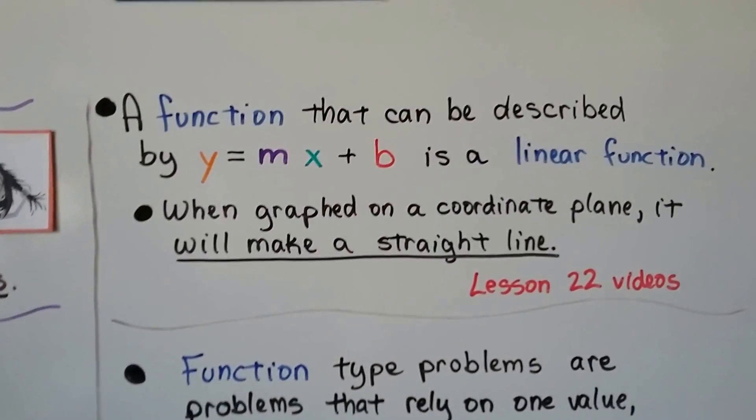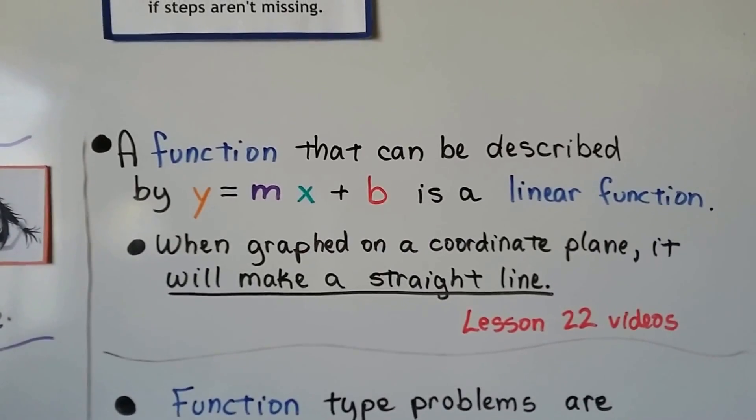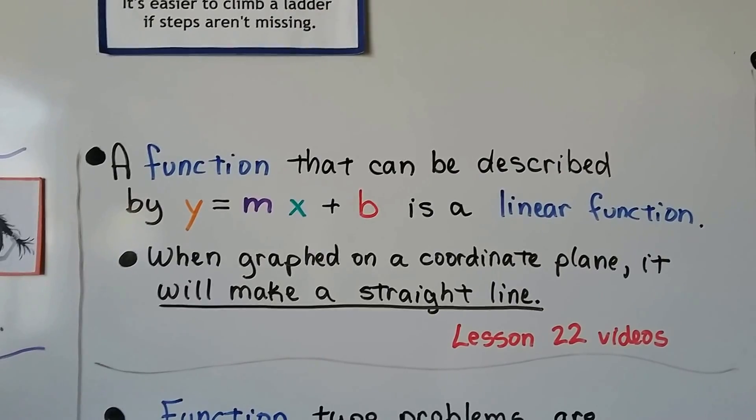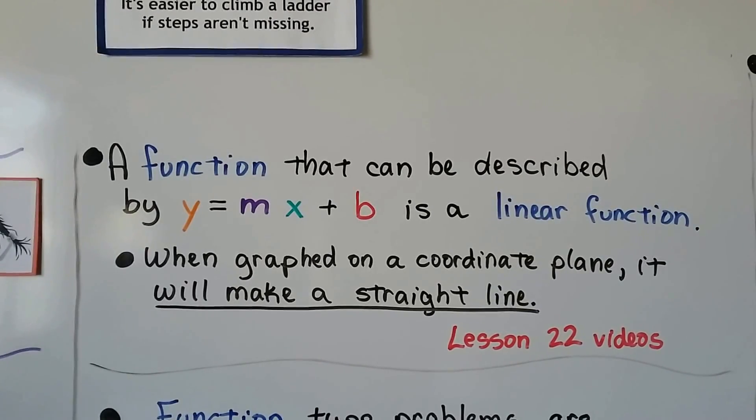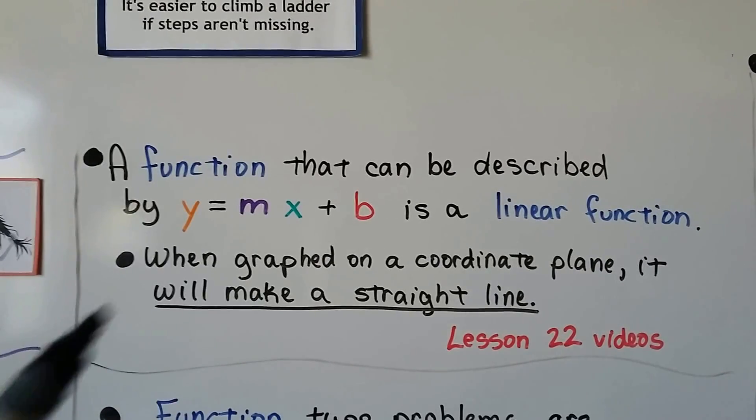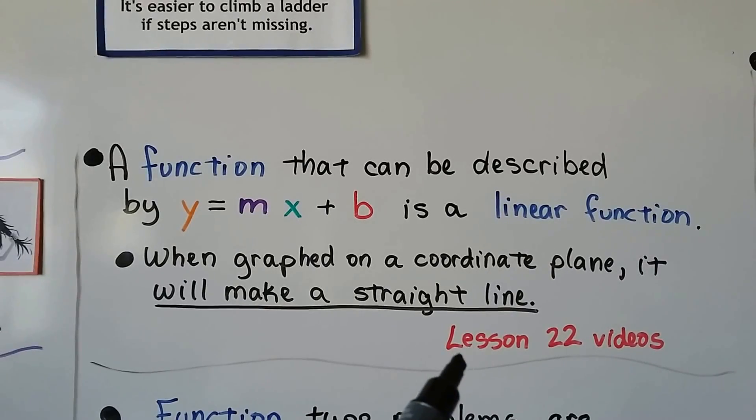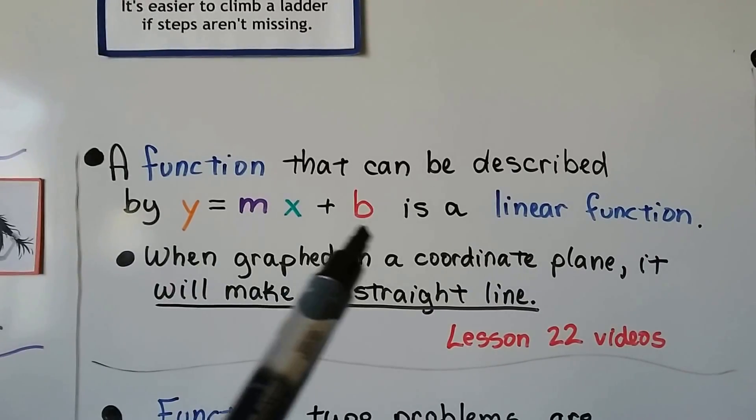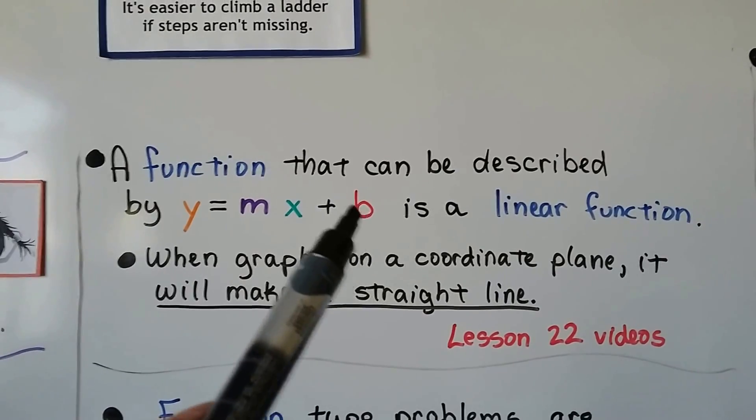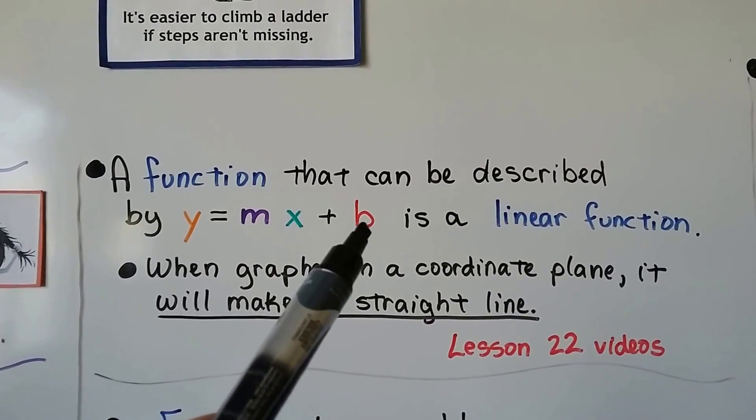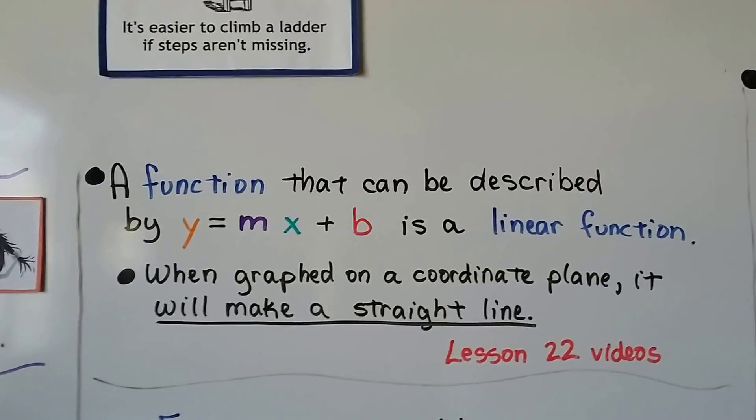A function that can be described by y equals mx plus b is a linear function. When graphed on a coordinate plane, it makes a straight line. We learned about this in lesson 22, about slope. The b is the y-intercept where the line crosses the y-axis.